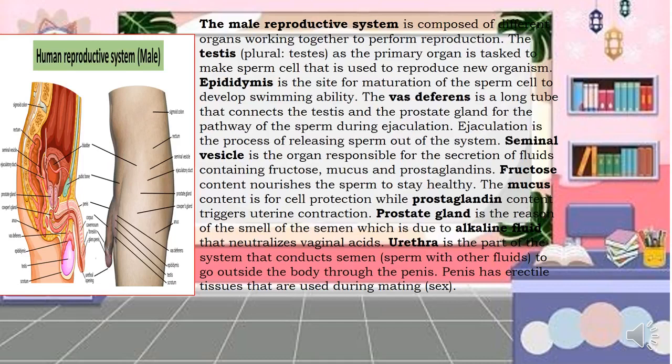The seminal vesicle is the organ responsible for the secretion of fluids containing fructose, mucus, and prostaglandins. Fructose nourishes the sperm to stay healthy, mucus provides cell protection, and prostaglandin triggers uterine contraction. The prostate gland is responsible for the smell of semen due to alkaline fluid that neutralizes vaginal acids. The urethra conducts semen and sperm with other fluids to go outside the body through the penis.